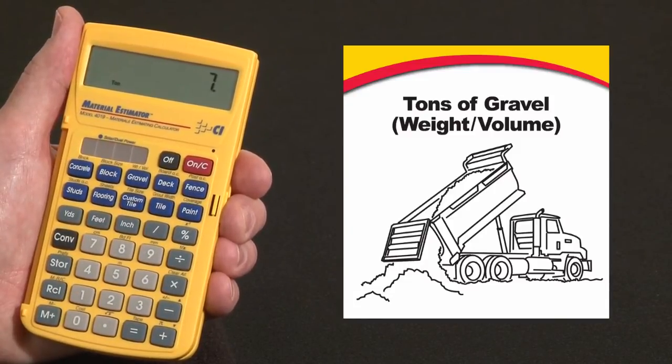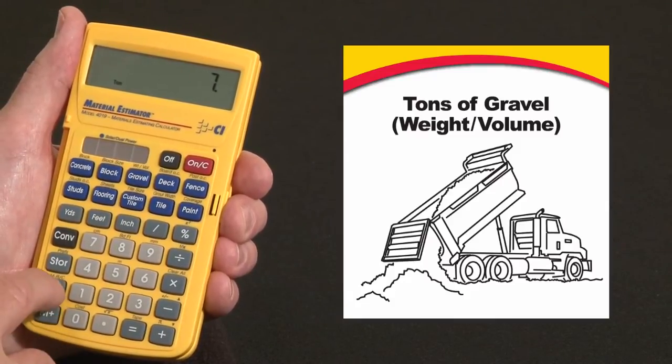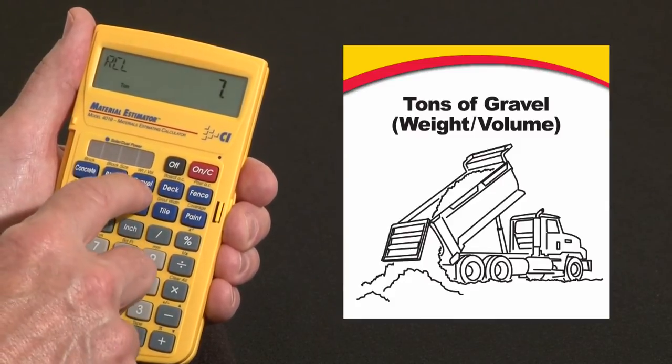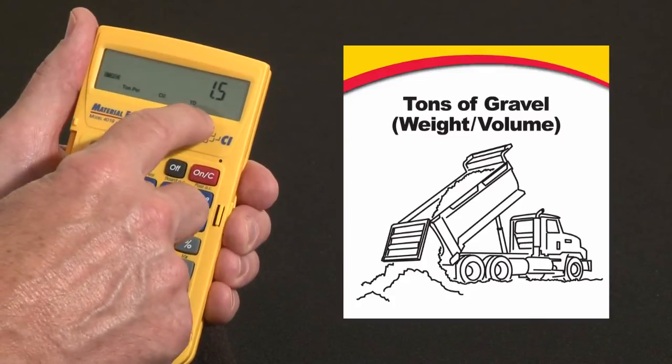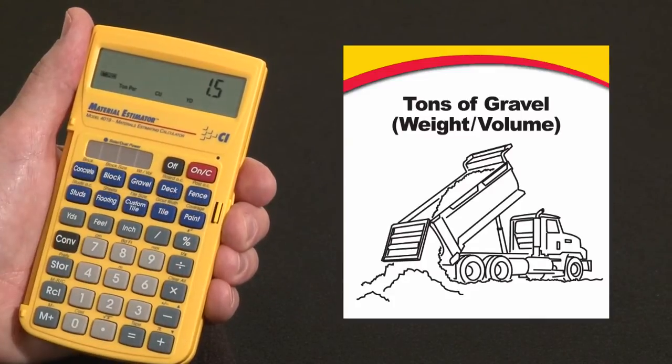Now that's based on the default weight per volume value. If I hit recall over the gravel key it says weight per volume. We're using 1.5 tons per cubic yard as the default.